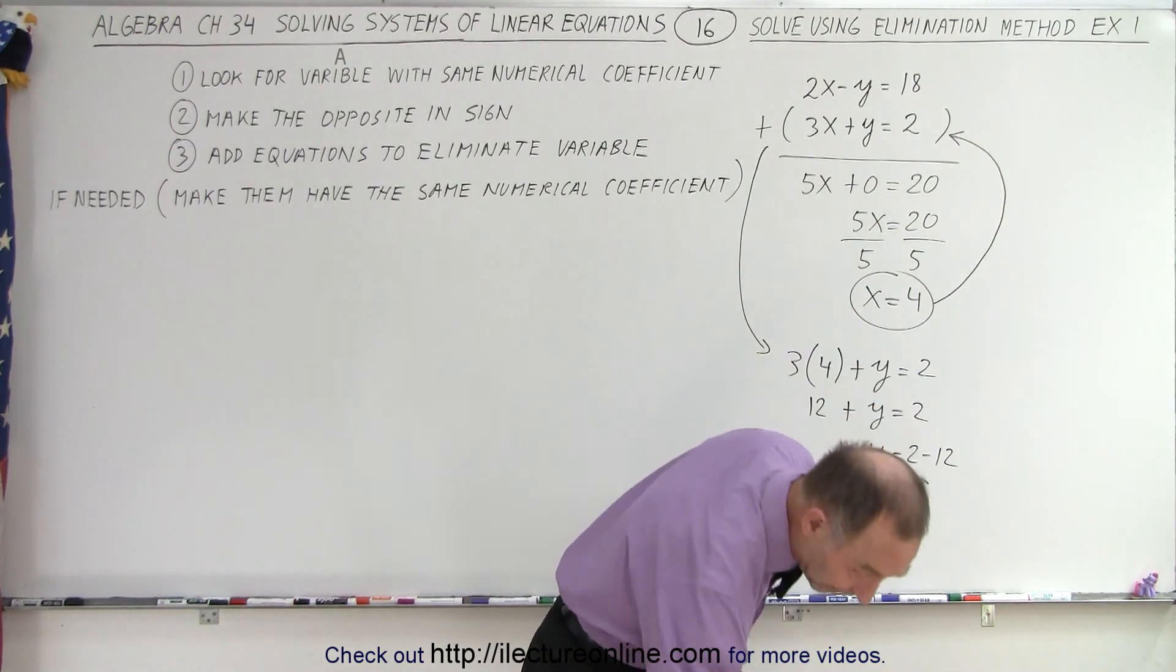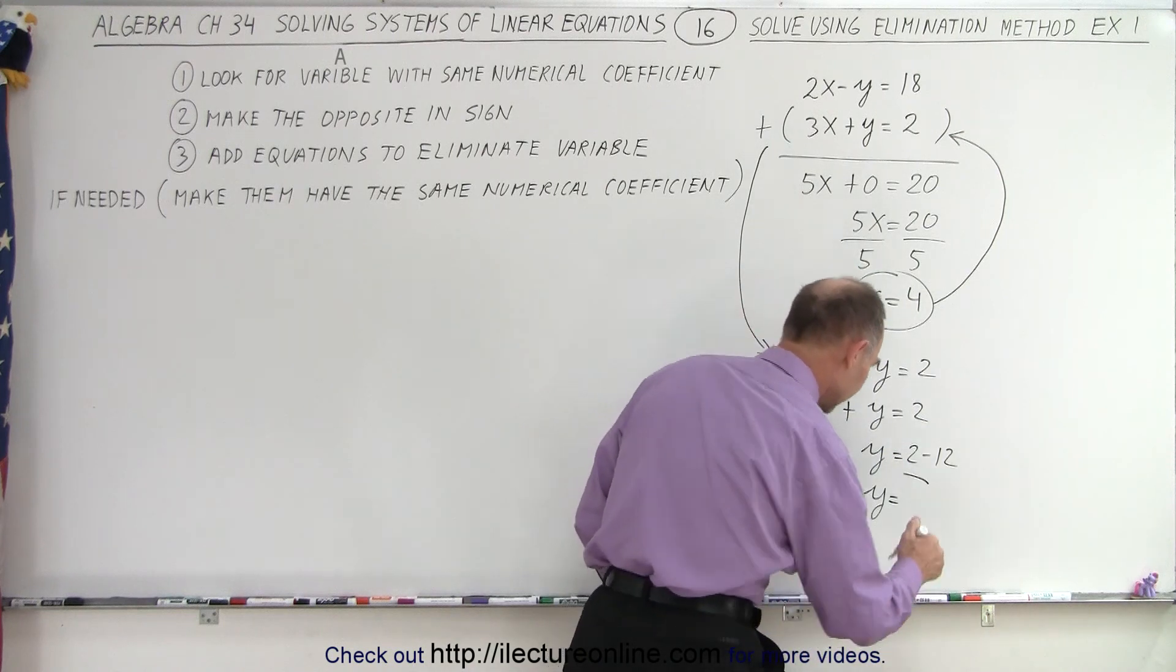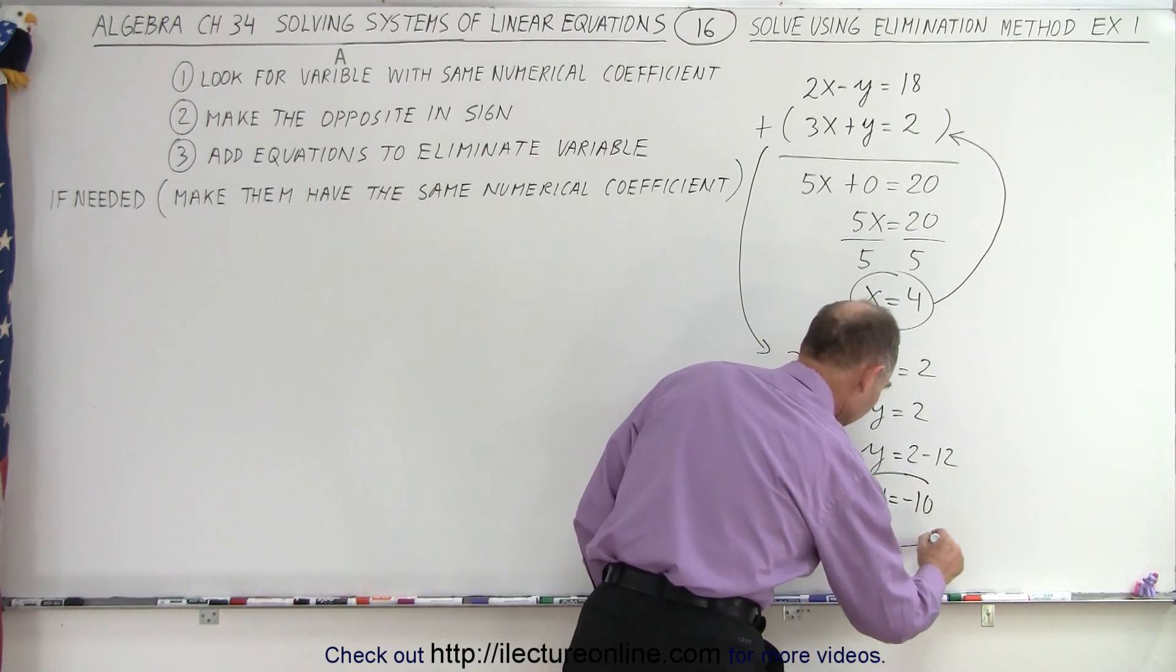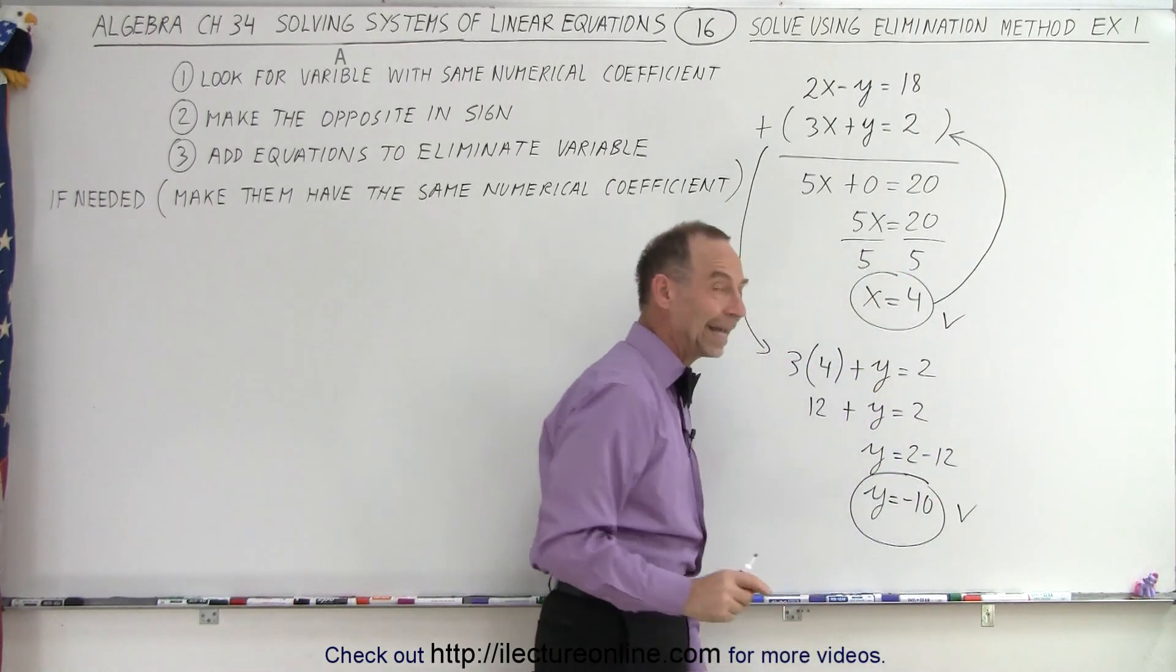I said negative 10, I wrote positive 10. A little quick on the draw there. There we go. So we have x equals 4, and y equals negative 10.